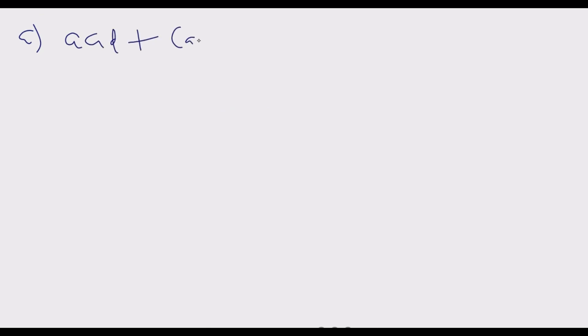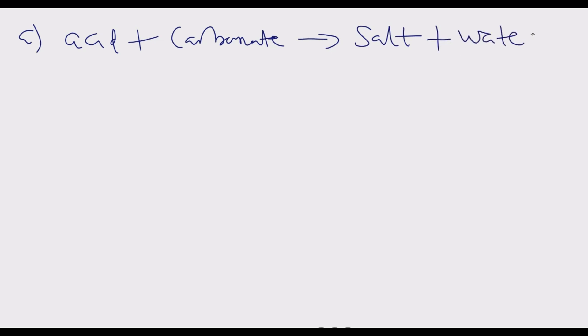Question A asks: name the two substances produced in the reaction besides carbon dioxide. We know that when we react an acid plus a carbonate, the products are basically a salt, plus water, plus carbon dioxide.